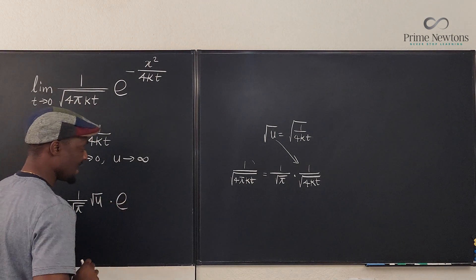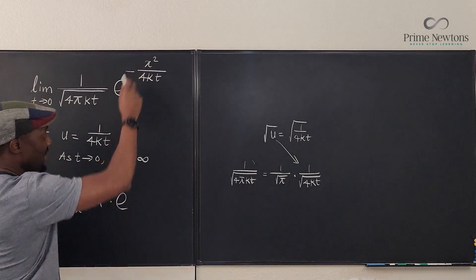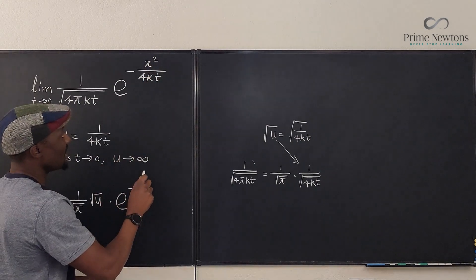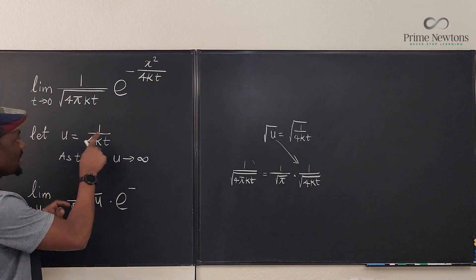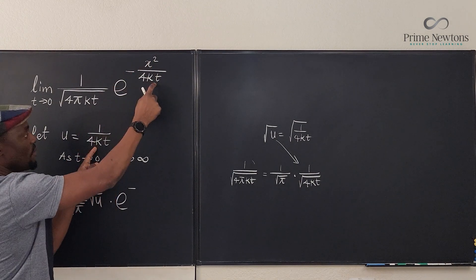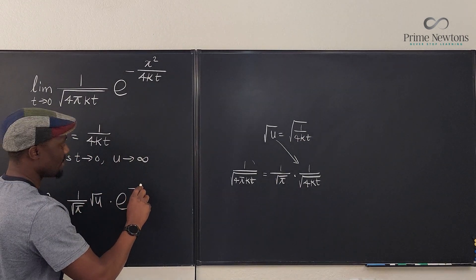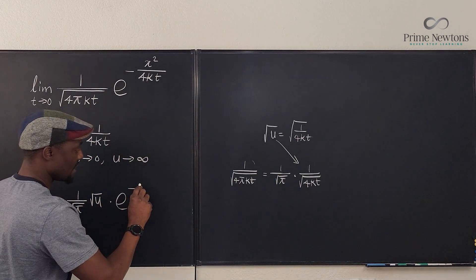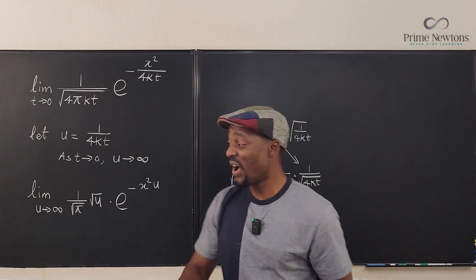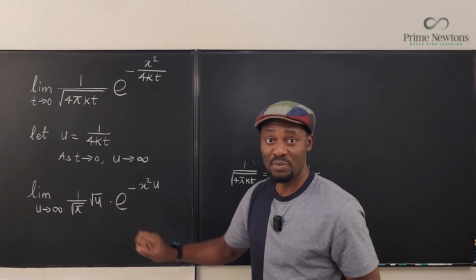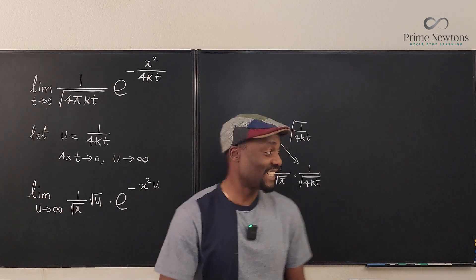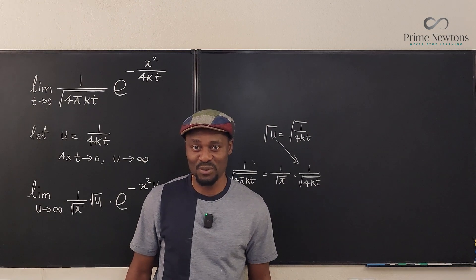Multiplied by e to the negative x squared times u — because u is one over 4kt, so x squared times u replaces x squared over 4kt. This form is a lot easier to perform the limit on as u goes to infinity. Let's clean up and rewrite it, and then apply L'Hôpital's rule.